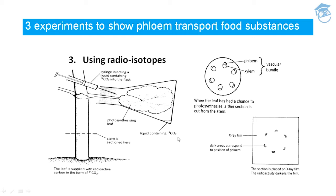The stem is then sectioned, and a zoom view of the cross-section shows the phloem and xylem within the vascular bundle — covered in detail in a previous section. When the leaf has had a chance to photosynthesize, a thin section is cut from the stem and placed on X-ray film. The dark areas correspond to the position of the phloem; the radioactivity darkens the film, showing that phloem is the tissue that transports food substances.